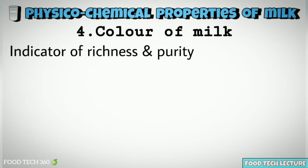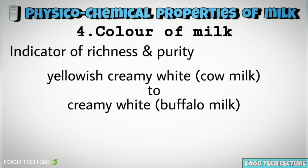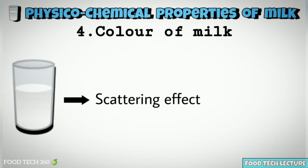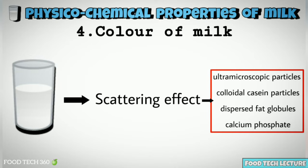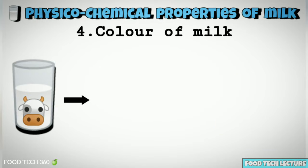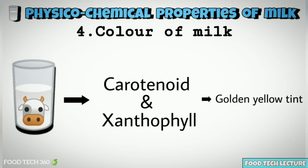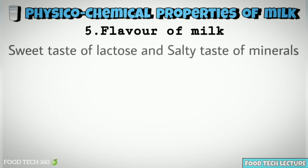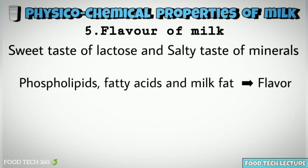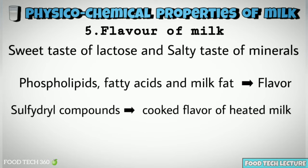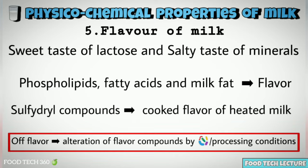Color of milk. Color is an indicator of richness and purity. Color ranges from yellowish creamy white to creamy white. The white color of milk is due to the scattering effect of reflected light by ultramicroscopic particles, colloidal casein particles, dispersed fat globules, and calcium phosphate. Cow's milk contains carotenoid and xanthophyll pigments, which are responsible for the golden yellow tint. Flavor of milk is composed of the sweet taste of lactose and salty taste of minerals. Phospholipids, fatty acids, and milk fat constitute the flavor. Sulfhydryl compounds contribute the cooked flavor of heated milk. Off-flavors are due to adulteration of flavor compounds by microbes or processing conditions.